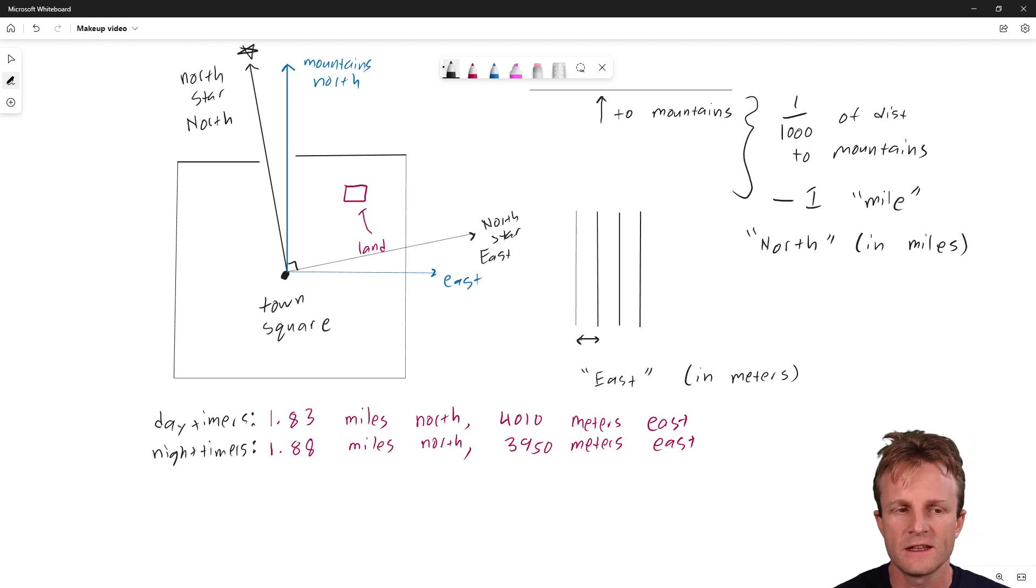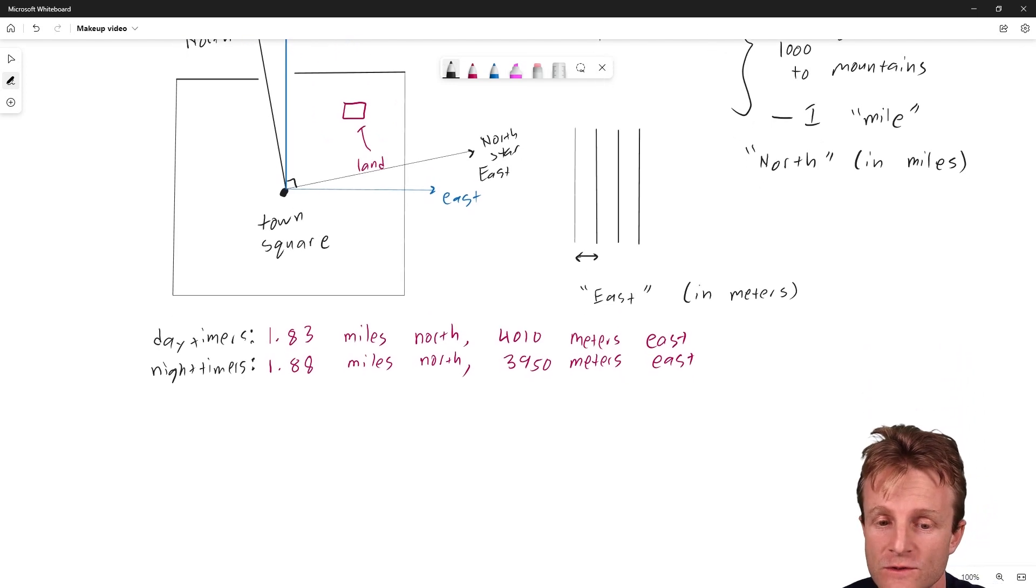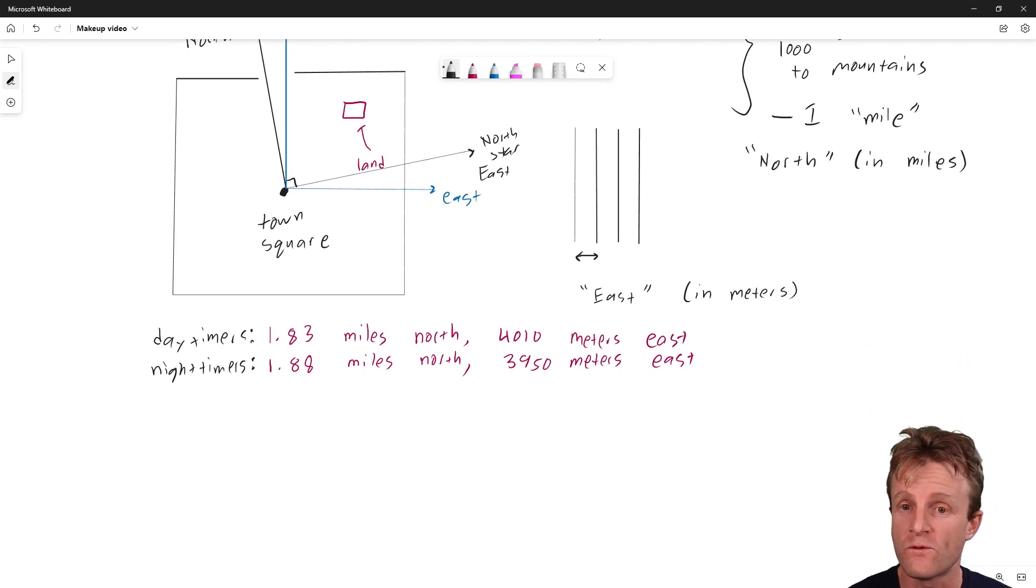And eventually, this led to arguments because both of them really believed in their measurement and nobody could figure out whether it was really 1.88 miles north or 1.83 miles north. And there was a big problem, maybe there was going to be a war. But then, one day, a brilliant graduate student came along and she realized something extremely deep. This graduate student measured a new fundamental constant of nature. And she called it K. And K was 1609 meters per mile. New constant of nature.